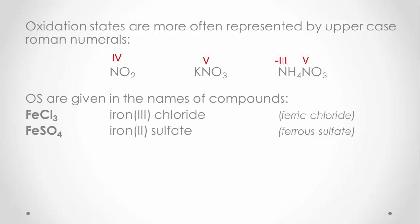Another convention is to use the oxidation state when naming compounds to show which form of the element is present. You will be familiar with naming compounds containing the Fe2+ or Fe3+ ions. You would have been taught to use the oxidation state of the ion when naming the compounds. There are older historical versions too: iron(III) is called ferric and iron(II) is called ferrous — the higher oxidation state gets the "-ic" suffix and the lower gets the "-ous" suffix.